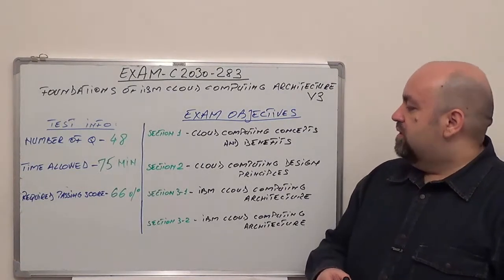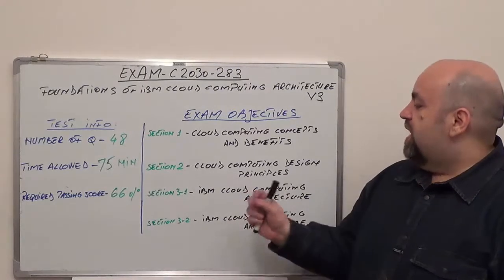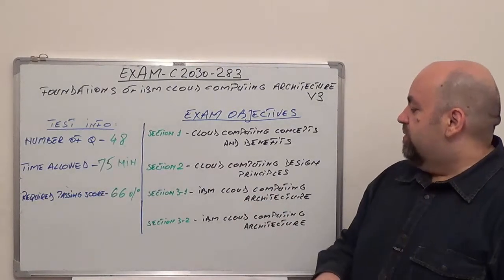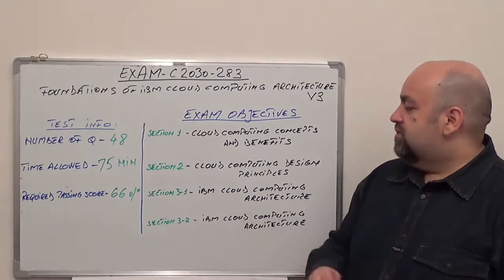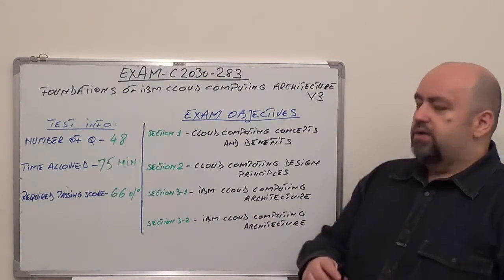And section number three, in two parts: section 3-1 is going to be IBM Cloud Computing Architecture, and section 3-2, also IBM Cloud Computing Architecture.